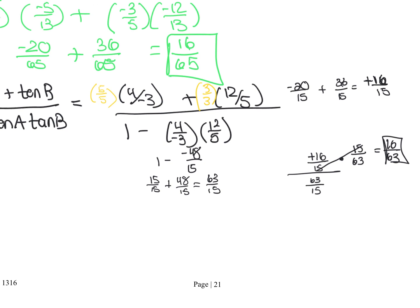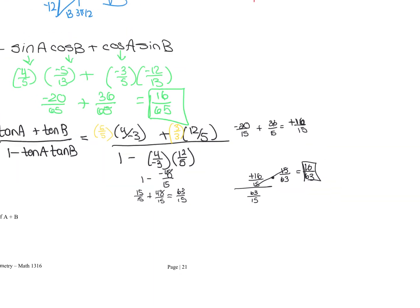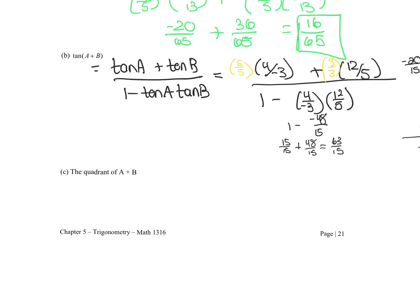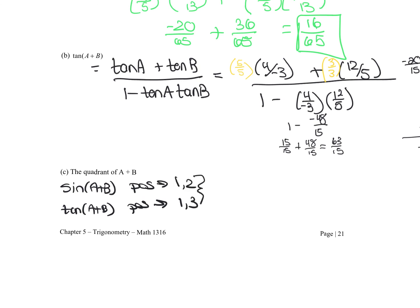The last question asks for the quadrant of A plus B. Sine of A plus B was positive, and tangent of A plus B was positive. Tangent is only positive in quadrants 1 and 3; sine is only positive in quadrants 1 and 2. Therefore, for both to be positive, the angle A plus B must be in quadrant 1.